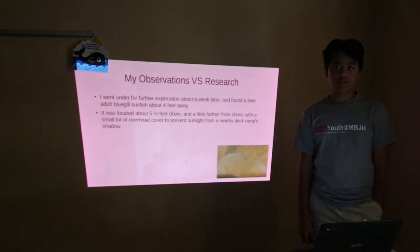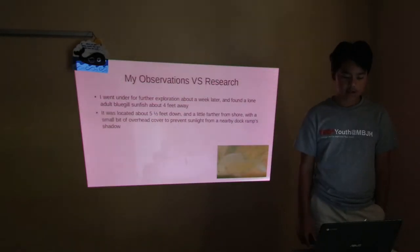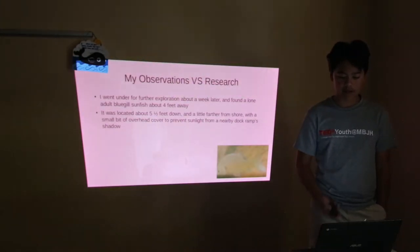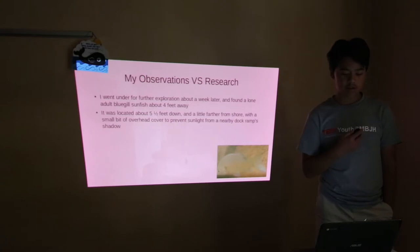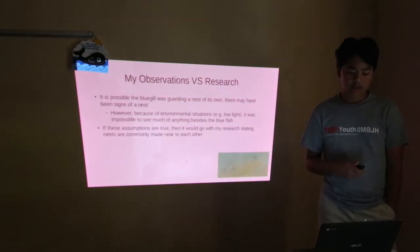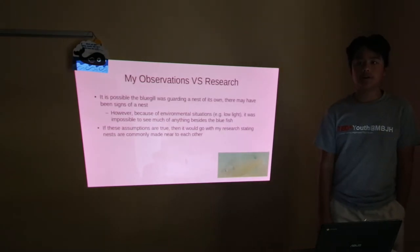I went under for further exploration about a week later and found a lone adult bluegill sunfish about four feet away. It was located about five and a half feet down and a little farther from shore with a small bit of overhead cover to prevent sunlight from a nearby dark ramp shadow. It is possible the bluegill may have been guarding a nest of its own. There may have been signs of a nest.